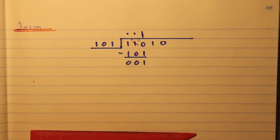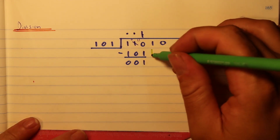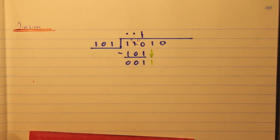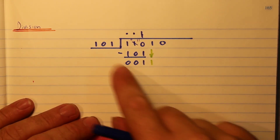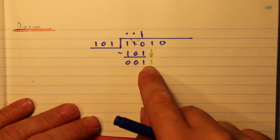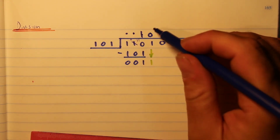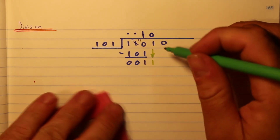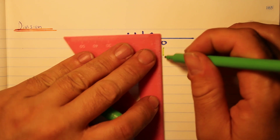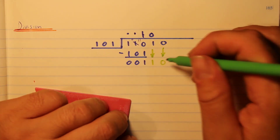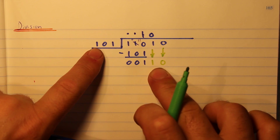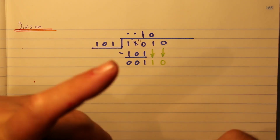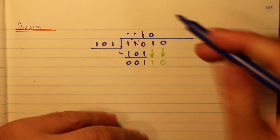After subtracting, we bring down the next bit — I'll bring down the one. Then I check: does this number go into this number? No it doesn't. So I bring down the next bit and check again — and yes, this number does go into this number.